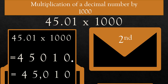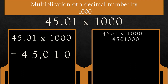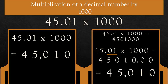Or in another way: multiply 45.01 × 1000, ignoring the decimal point. We know that 4,501 × 1000 is equal to 4,501,000. Now, how many digits after the decimal in 45.01? Yes, 2. So count two digits from the right — 1, 2 — and place the decimal in the product. So the answer is 45,010.